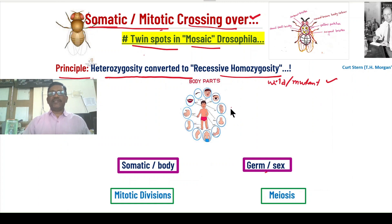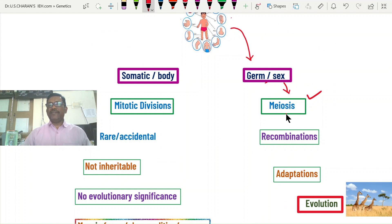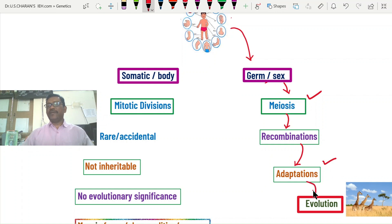In the animal kingdom, most animals are sexually reproducing; only fewer asexually reproducing animals follow somatic or mitotic divisions. In the body, sex cells are germline cells present in the testis or ovaries and undergo meiotic divisions. During meiosis, crossing over occurs between chromatids of homologous chromosomes, forming genetic recombinations passed to the next generation — raw material for change, adaptation, and ultimately the formation of new species.